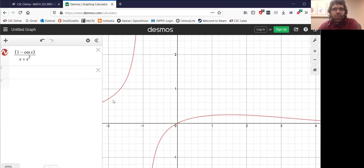And before we end the video, let's go ahead and verify graphically. This is the graph of one minus cosine x over x plus x squared. And you see, as x approaches zero, y also approaches zero from both directions. So the limit really is zero.